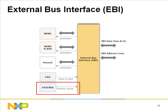The EBI module has an internal arbitration mechanism requiring no programming. The only programmable aspect is the priority of the different ports, done by setting values in the EBI timeout value 1 register in the sysreg module. The lower the programmed value, the higher the priority. By default, port 1 handling the MPMC has the highest priority; ports 2 and 3 have equal priority.